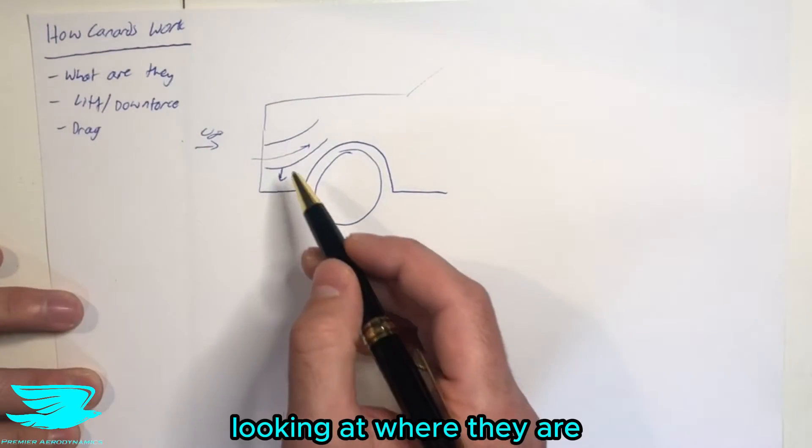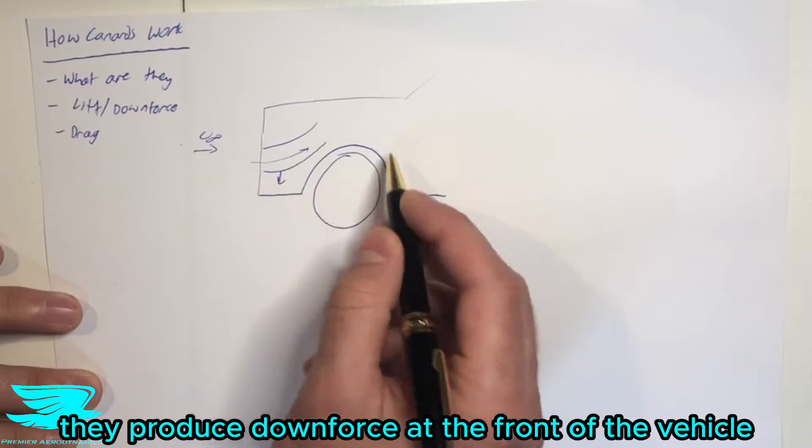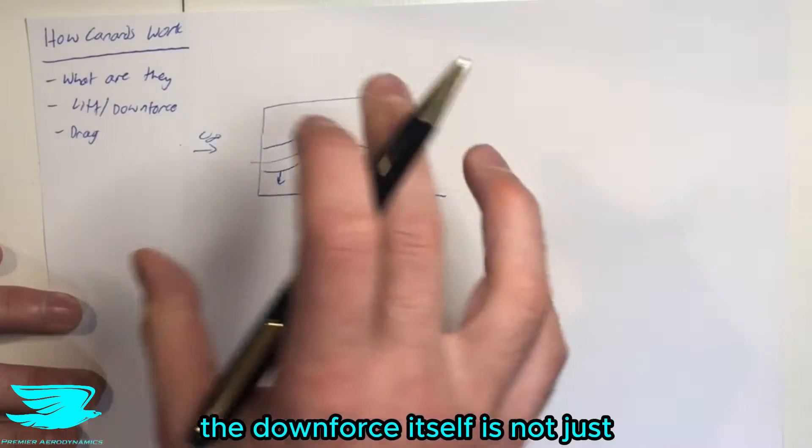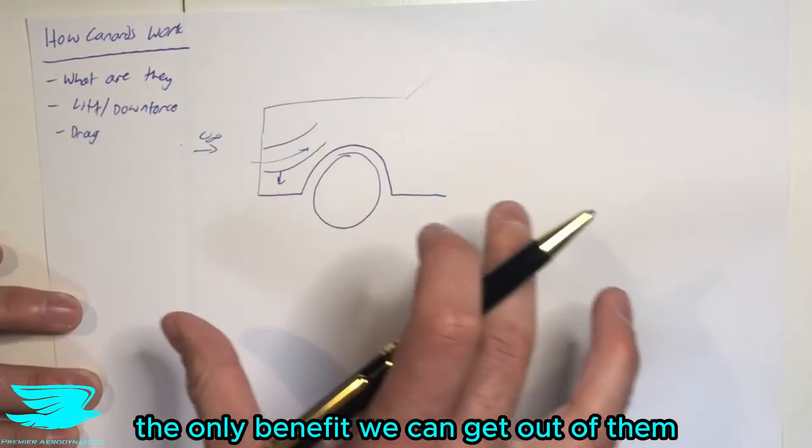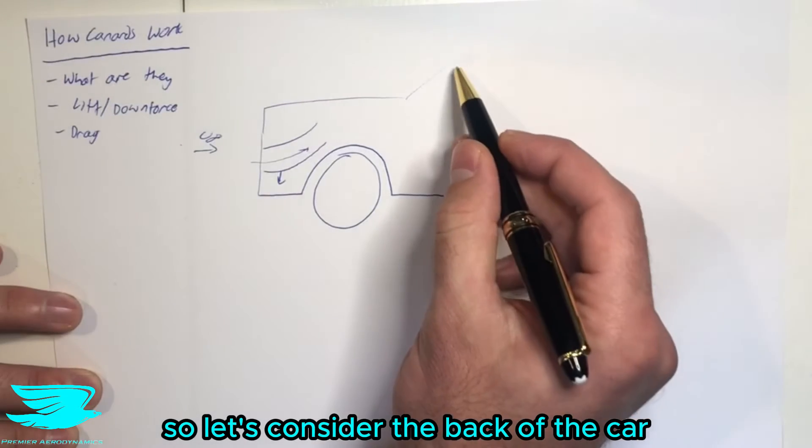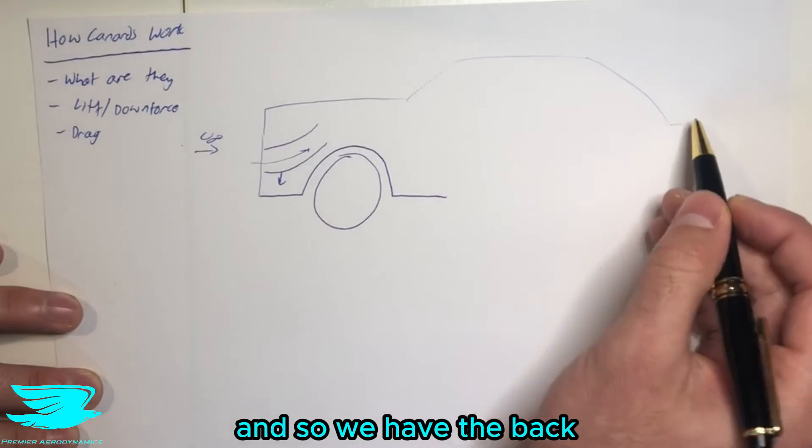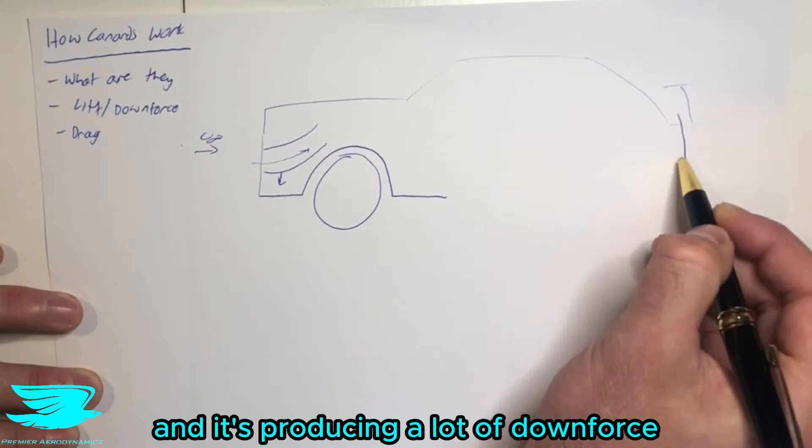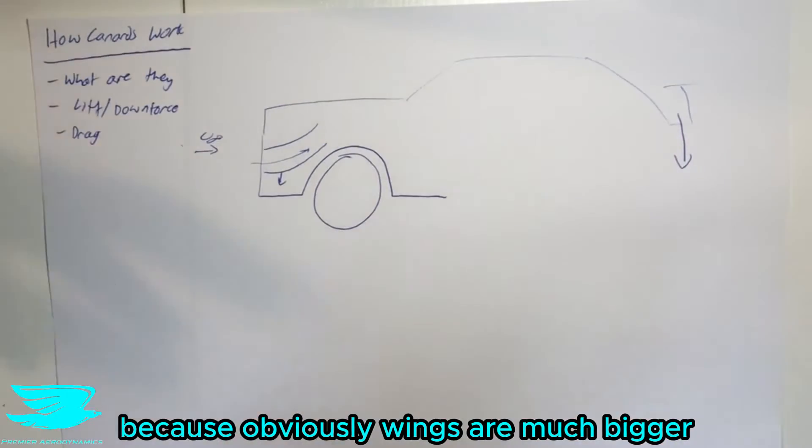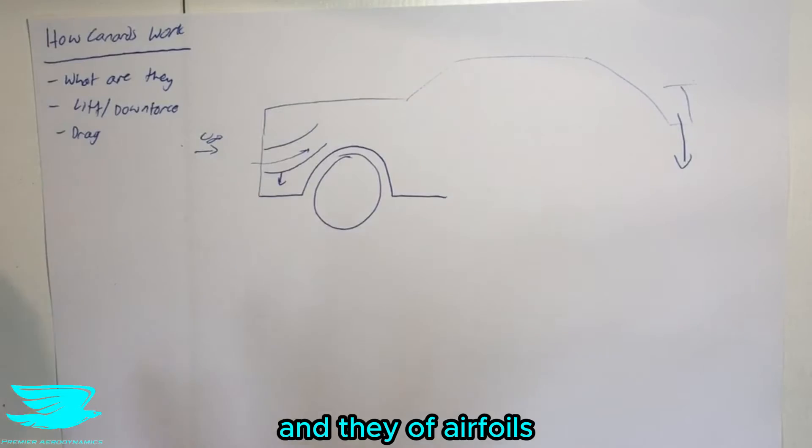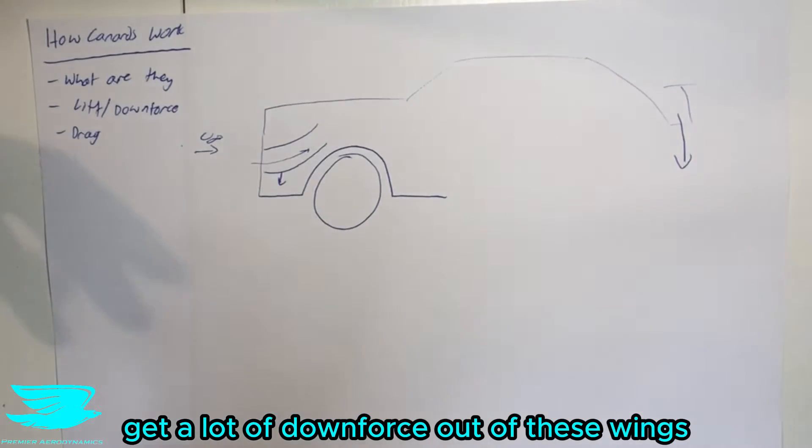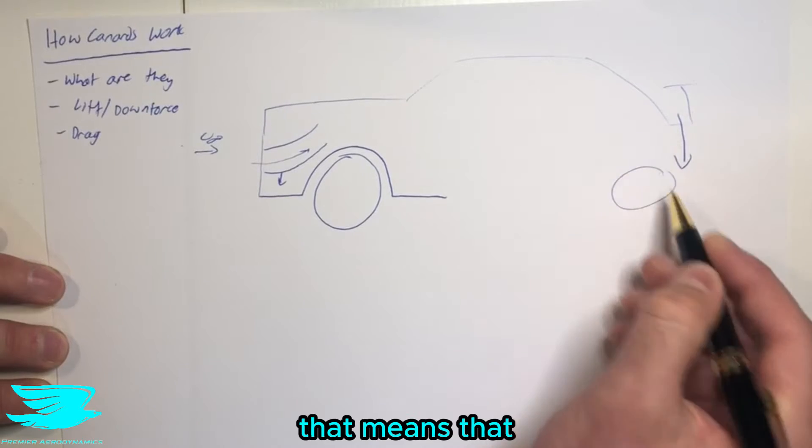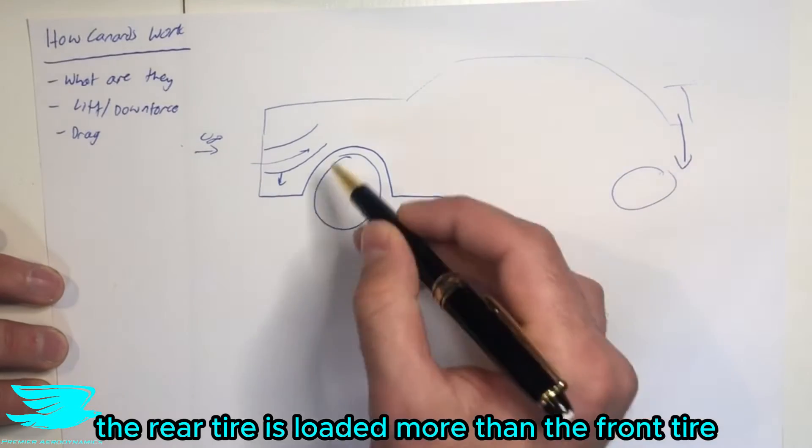So first of all, looking at where they are, they produce downforce at the front of the vehicle. In terms of their benefits, the downforce itself is not just the only benefit we can get out of it. Let's consider the back of the car. We have the back, and we have a wing here of some description, and it's producing a lot of downforce, because obviously wings are much bigger and they have more area, so you can really get a lot of downforce out of these wings. And if you have a lot of downforce at the back, that means that the rear tire is loaded more than the front tire.